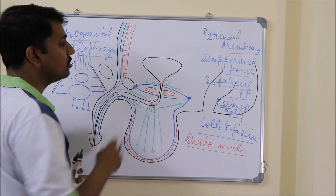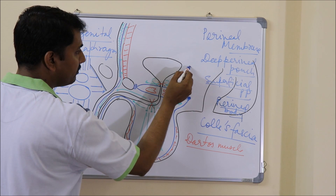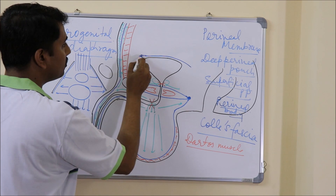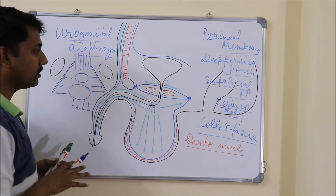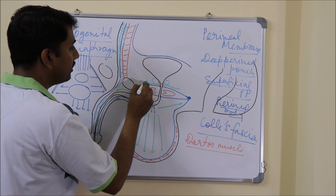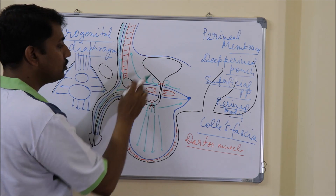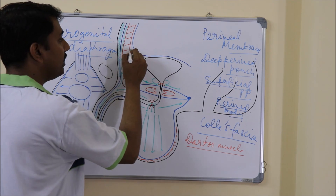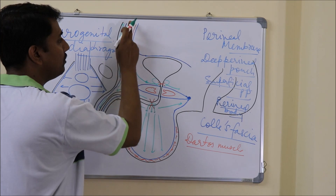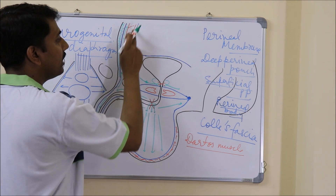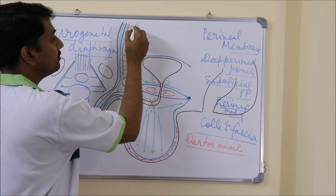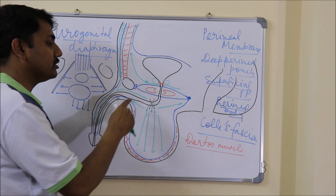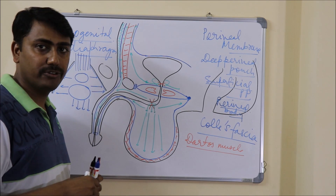Let us also put the peritoneum in this diagram. The peritoneum covers the superior surface of the urinary bladder and then comes onto the anterior abdominal wall. Urine from here can go into the anterior abdominal wall through the retropubic space, but here the urine will lie between the abdominal muscles and the lining peritoneum. This was the difference between the sites of extravasation in superficial injury versus deeper injury of the urethra.